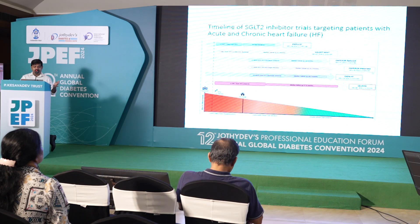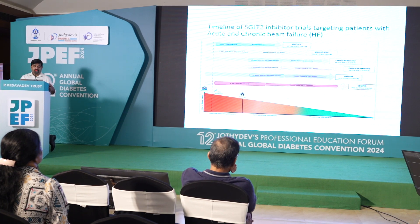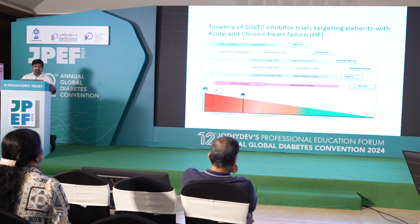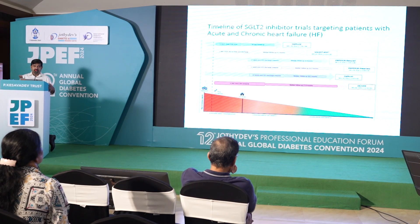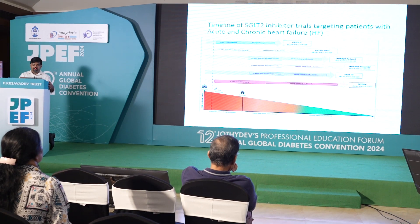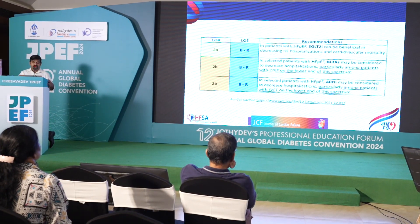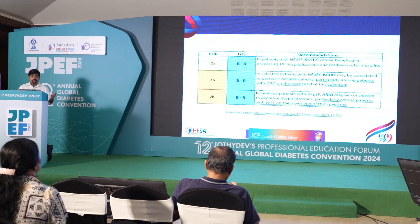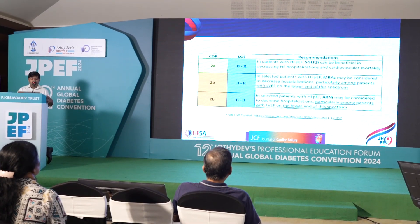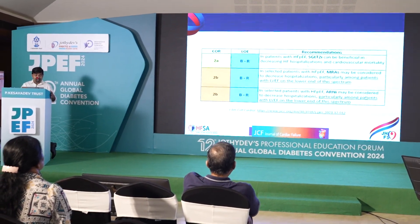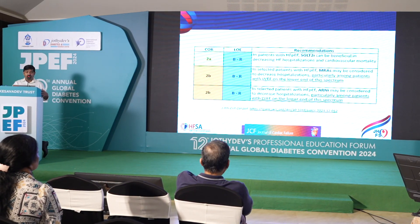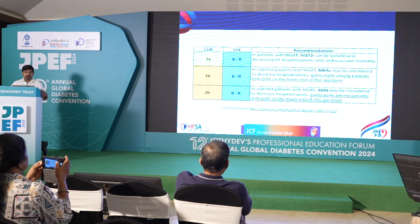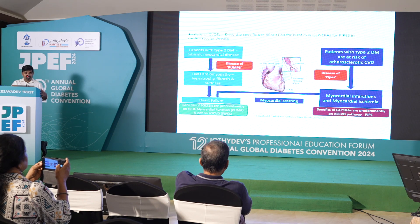In specific trials, EMPEROR-Preserved and DELIVER looked at empagliflozin and dapagliflozin in heart failure with preserved EF patients and found them to be beneficial. So SGLT2s are useful not only in the reduced EF population but also in the preserved EF population. SGLT2s have made it into the guidelines at the 2A indication for heart failure with preserved EF.